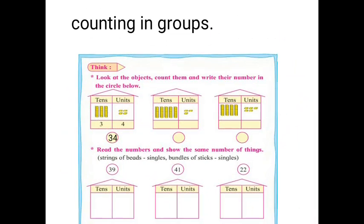Now page number 14. Look at the objects, count them, and write their number in the circle. In the first one, how many groups in tens? There are three groups. And how many single objects in units? There are four. So 3 and 4 is 34. Write 34 in the circle. Like this, solve the next one.